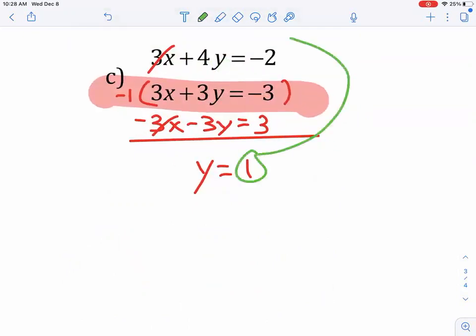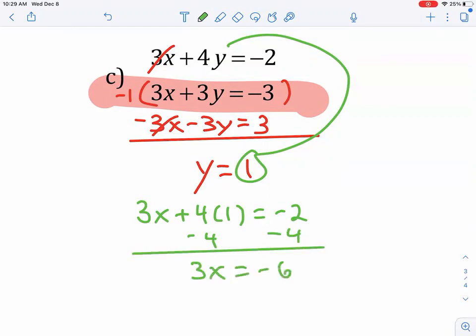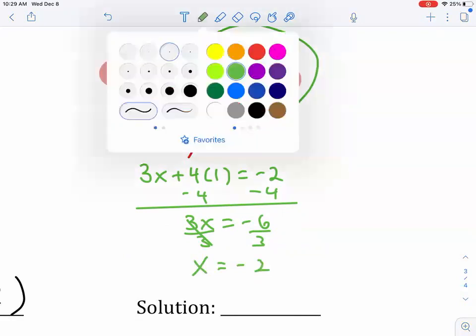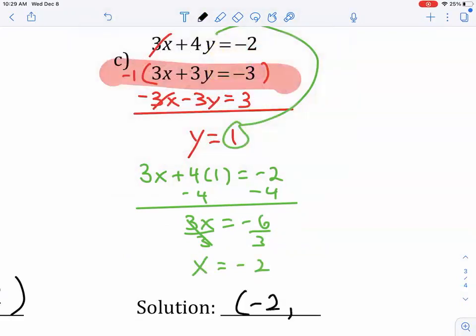So, let's take that and plug it back in and finish it off. So, I have 3X plus 4 times 1 is equal to negative 2. I'll subtract the 4 over. So, 3X is equal to negative 6. We're going to divide both sides by 3, and X will come out to be negative 2. And so, our solution is negative 2, 1.